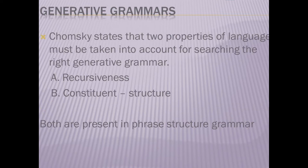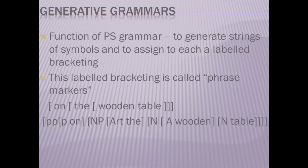Chomsky states that two properties of language must be taken into account when searching for the right generative grammar: A) Recursiveness and B) Constituent Structure. Both are present in phrase structure grammar. The function of PS Grammar is to generate strings of symbols and to assign to each a labeled bracketing, which is called phrase markers.